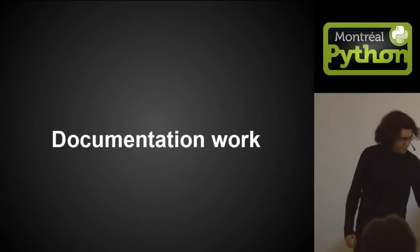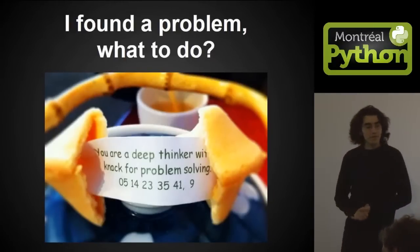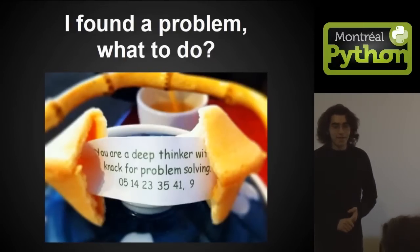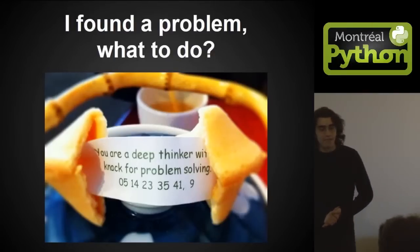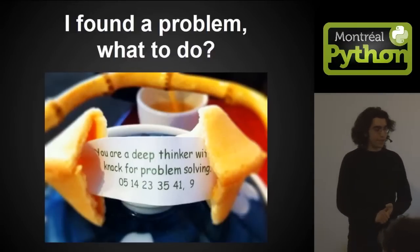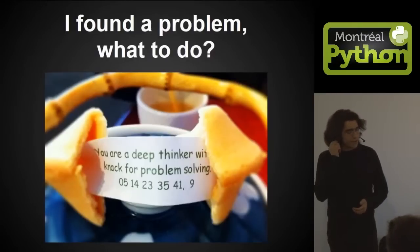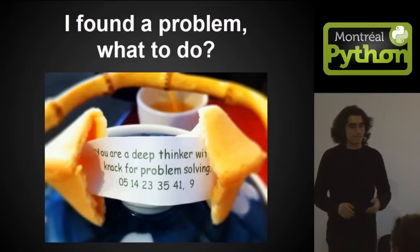So first part, documentation work. First thing, you're reading the Python documentation because you're using it. You find a problem. What do you do? There's a link on each page where you can report a bug. The quick way is to send a mail to the documentation mailing list, and someone will transform it into a proper bug report, and maybe make a patch. You can just shoot a mail, and it will be taken care of.